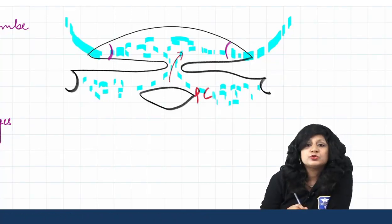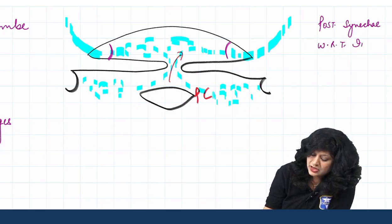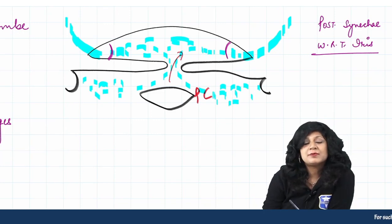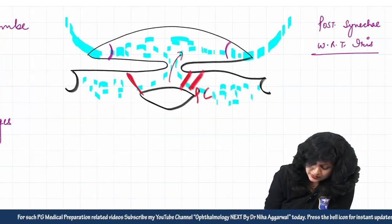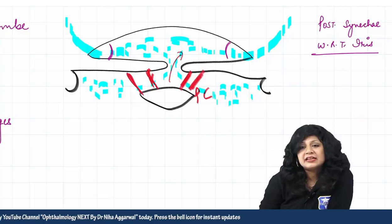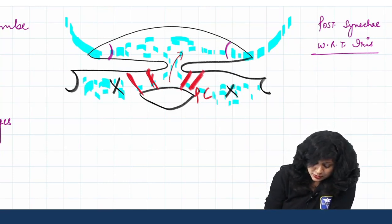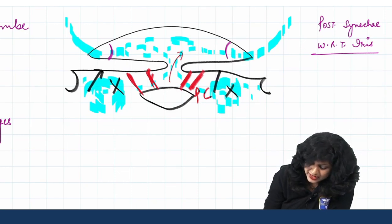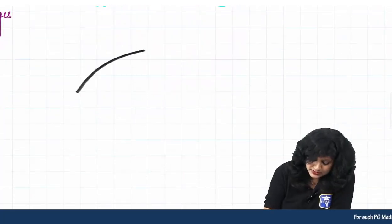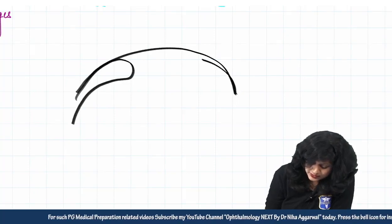Now, synechia are always named with respect to the iris. Posterior synechia are posterior to the iris — meaning between the iris and the lens. Due to posterior synechia, the aqueous humor is not able to flow through the pupil. A large amount of aqueous collects in the posterior chamber, and this aqueous collection pushes the iris forward, causing it to balloon outward.